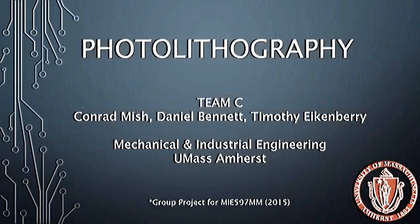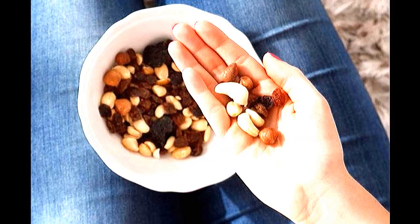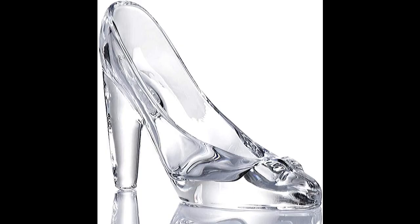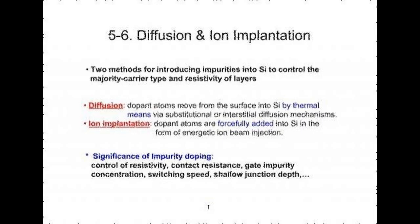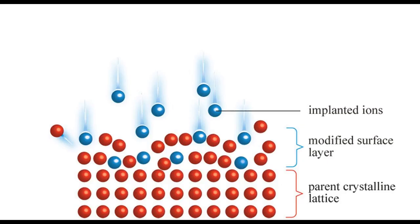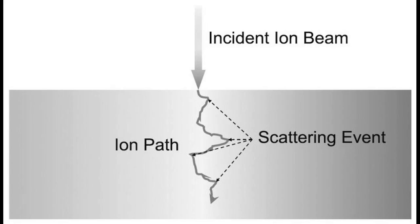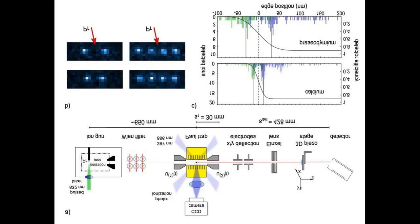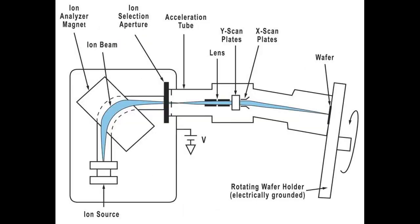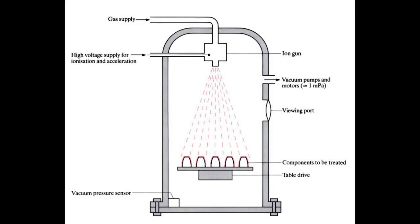Ion implantation equipment typically consists of an ion source, where ions of the desired element are produced, an accelerator, where the ions are electrostatically accelerated to a high energy, and a target chamber, where the ions impinge on a target, which is the material to be implanted.